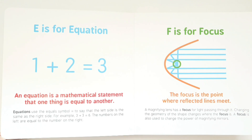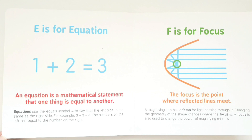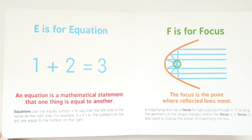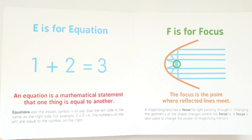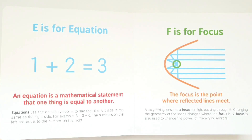F is for focus. The focus is the point where reflected lines meet. A magnifying lens has a focus for light passing through it. Changing the geometry of the shape changes where the focus is. A focus is also used to change the power of magnifying mirrors.